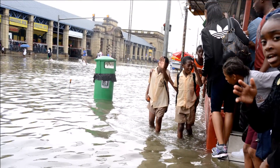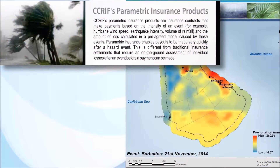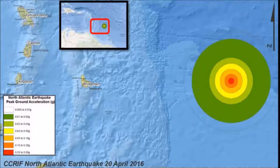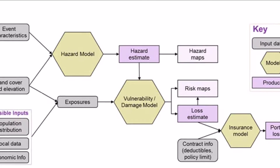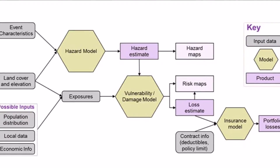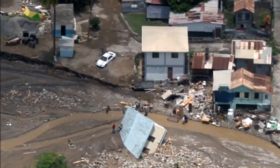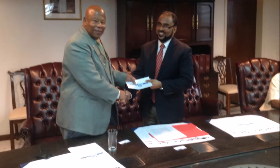These are insurance contracts that make payments based on the intensity of an event — for example, hurricane wind speed, earthquake intensity, or volume of rainfall — and the amount of loss calculated in a pre-agreed model caused by these events. Therefore, payouts can be made very quickly after a hazard event.